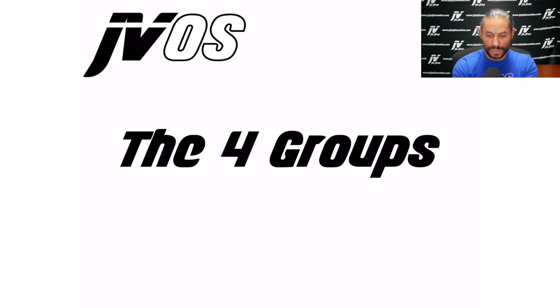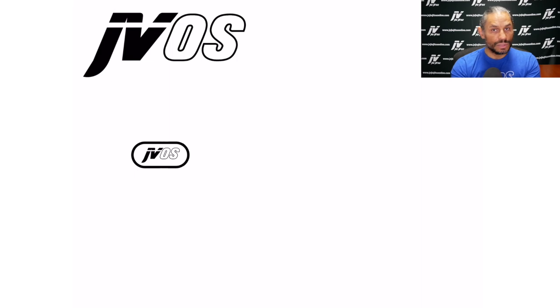So there are four groups. I've tried to do this a few different ways. I think that this current iteration makes the most sense. So I break JVOS down into four groups. It is a tremendous amount of information. It is a large course, so I'm trying to simplify it as best I can.